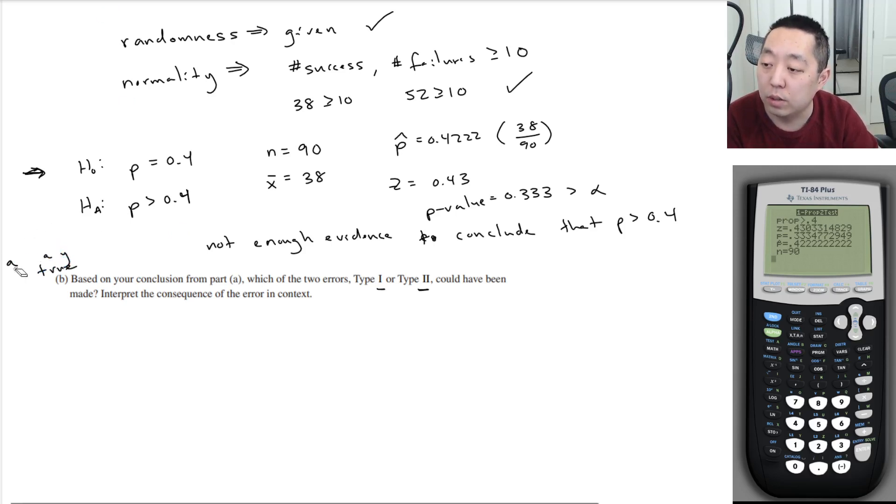Okay, so actually, let me write it down here because I'm going to upload these as notes. So HA is actually true. So what we would have made is a type 2 error because the way I remembered is that type 2 error means the second one was true. So this is a type 2 error. Type 2 error is possible.